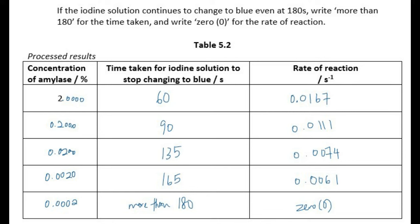With our results, we can process them and figure out the rate of reaction. The rate of reaction is 1 over the time taken for iodine solution to stop changing to blue. Make sure that the time taken is always in seconds and whole numbers. Wherever there's decimal places inside the body of the table, make sure it's the same number of decimal places throughout.